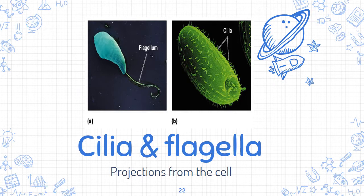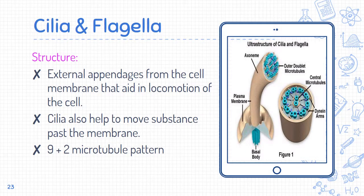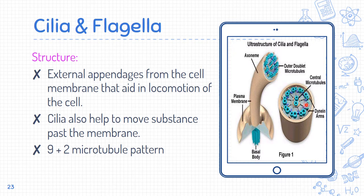Next are cilia and flagella, which are also extensions from the cytoskeleton. They are projections from the cells — external appendages from the cell membrane that aid in locomotion. Cilia also help to move substances past the membrane. Structurally, cilia and flagella are made in a nine-plus-two microtubules pattern.